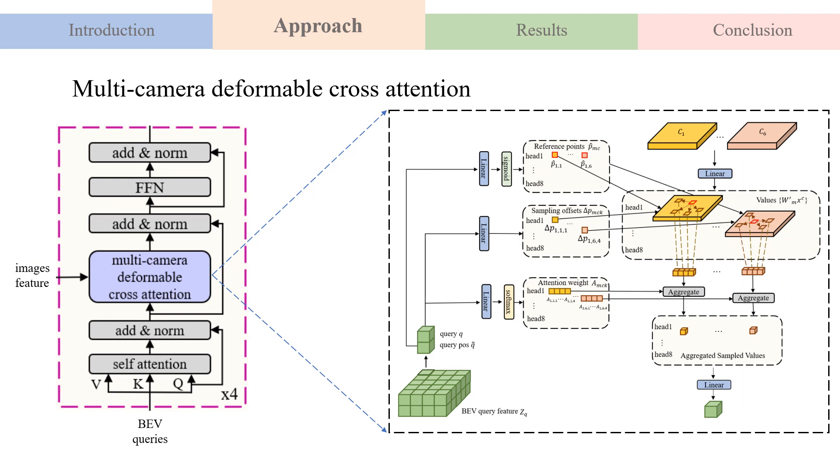In the BEV transformer decoder, we introduce a multi-camera deformable cross-attention module to replace the standard cross-attention, which links feature maps from multiple cameras to BEV queries.